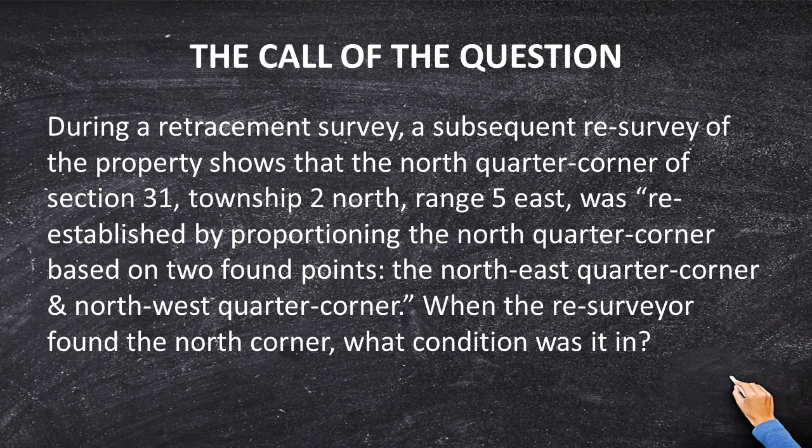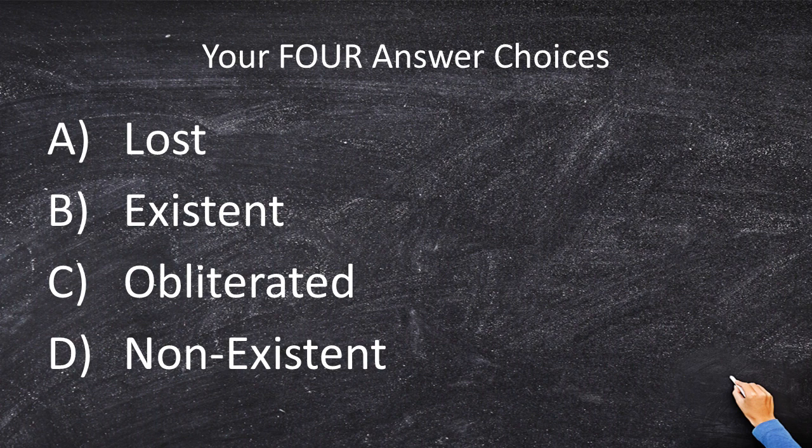Let's distill this down to the most important parts. There was a corner back ten years ago in a previous survey, and that corner had to be proportioned. Why was it proportioned? Because they couldn't find the corner. What kind of condition was it in — was it lost, existent, obliterated, or non-existent?